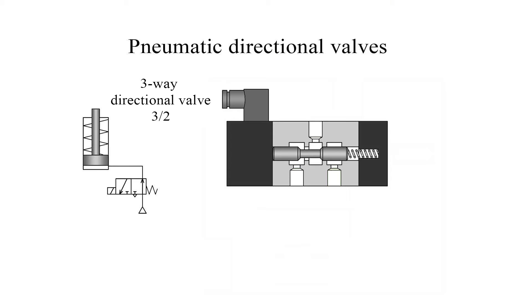The designation of a directional valve refers to the number of service ports and the number of spool positions. A pneumatic valve with three service ports and two spool positions is designated as a three two-way directional valve.